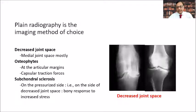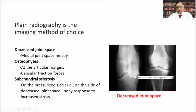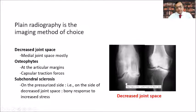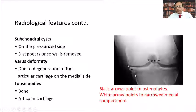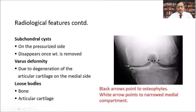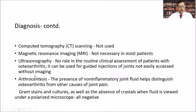On the X-ray shown here, the medial joint space is almost nil, there is osteophyte formation, subchondral sclerosis, and a subchondral cyst is visible. These are the typical findings seen in osteoarthritis.